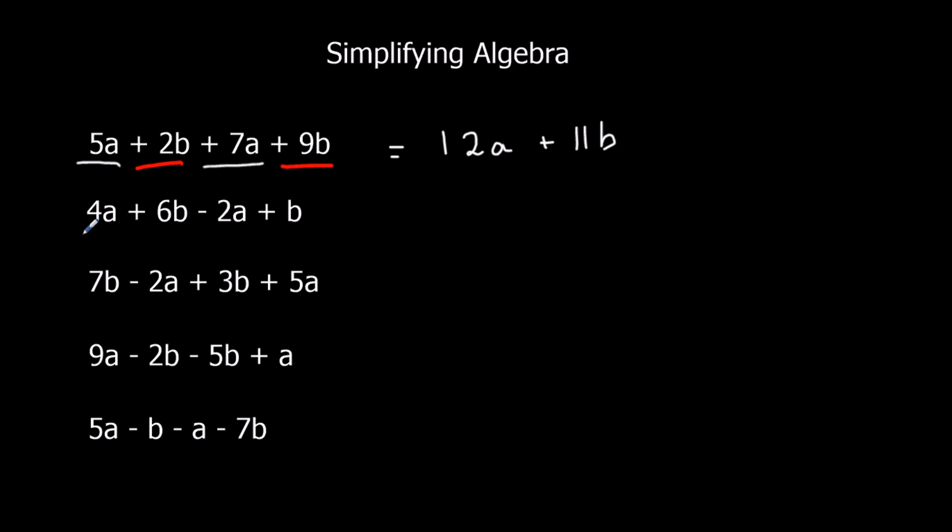Same thing here, I've got 4a, I've got minus 2a, I've got 6b plus another b. So, 4a take away 2a, because this is negative, negative 2a. 4a take away 2a, is 2a. And 6b plus another b, makes 7b.